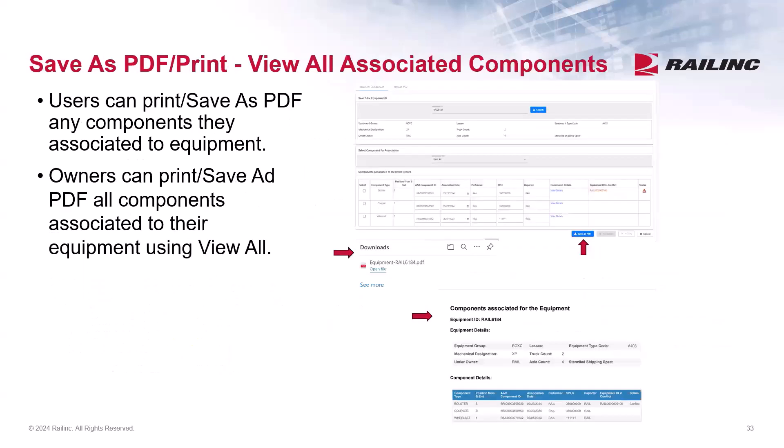A new feature recently added in Component Registry is the Save As PDF option. This enhancement allows users to save and print any component data associated to a piece of equipment. Owners can also print the component association details for all component types associated to their equipment by using View All. After selecting the Save As PDF function, the system will download the data and save it to your computer so you can print it at your convenience.